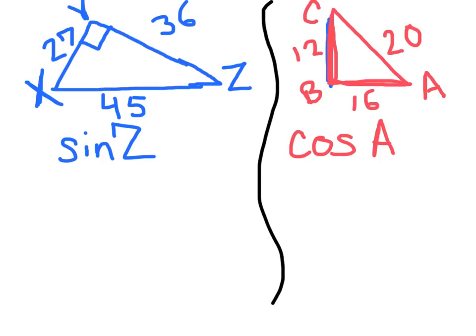Let's look at a few problems. So for our first problem, we have triangle XYZ, and we are looking for the sine of Z. And we remember from the last slide that sine is so, so sine equals opposite over hypotenuse.